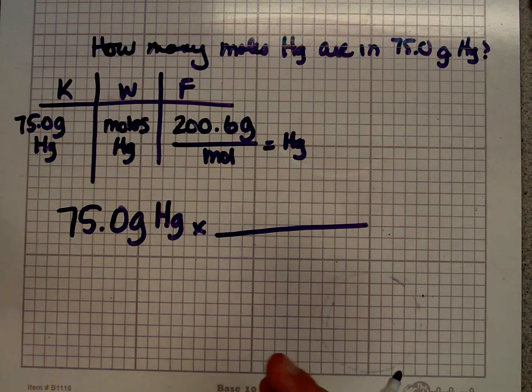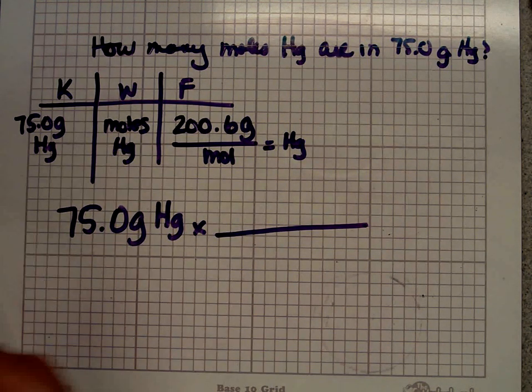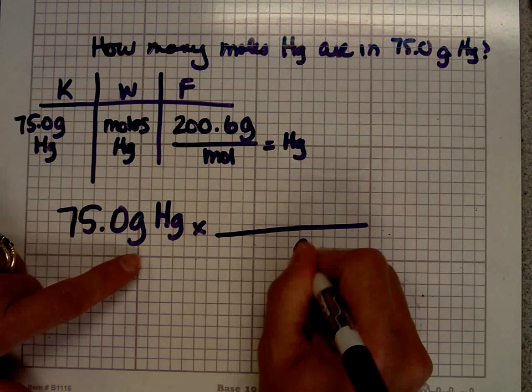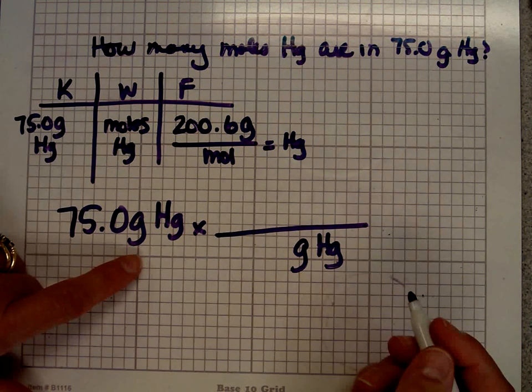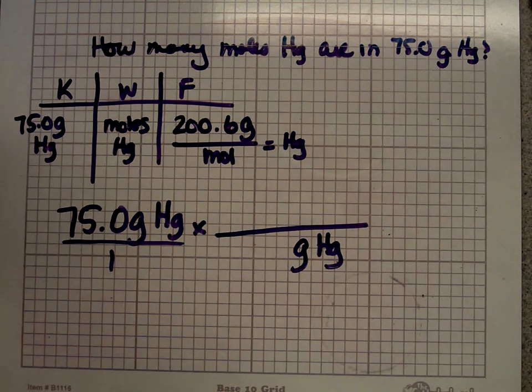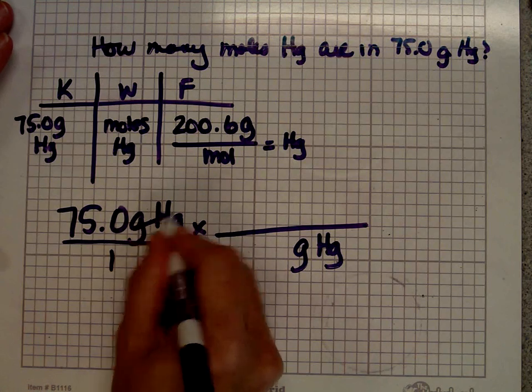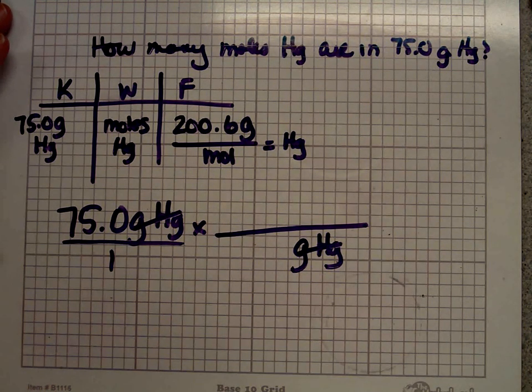So 75 grams of mercury, I always multiply it by something. I never try to figure out when do I divide, when do I multiply. In my mind, I always multiply. I want to get rid of grams of mercury, so I'm going to put that on the bottom in the denominator because really this is over 1. It's an invisible over 1, but it's there. And I want to get rid of it. So whatever's in the numerator, if I put it in the denominator, then I can cancel it out.